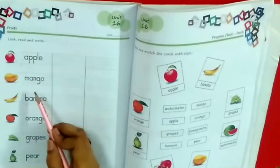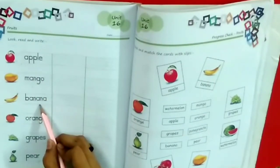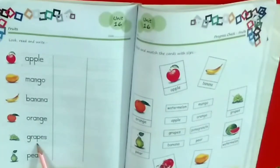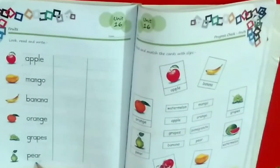A-P-P-L-E, apple. M-A-N-G-O, mango. B-A-N-A-N-A, banana. O-R-A-N-G-E, orange. G-R-A-P-E-S, grapes. P-E-A-R, pear.